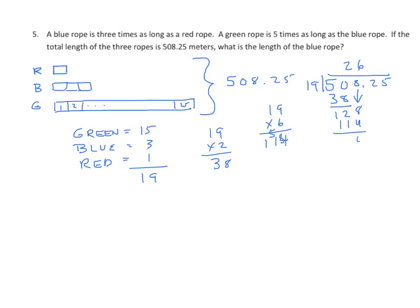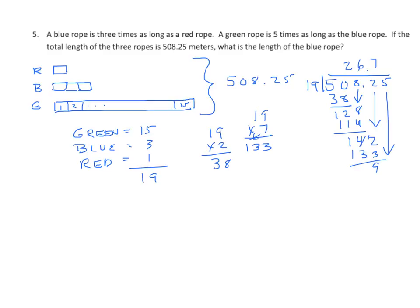We're now going to the tenths place. I'll bring down that 2 and think 20 times 7. So I multiply 19 times 7: 7 times 9 is 63, regroup 6, 7 times 1 is 7 plus 6 is 13 — so I have 133. I subtract and get 9. I bring down my 5 and think 20s — 95 is close to 100, so 19 times 5: 5 times 9 is 45, regroup 4, 5 times 1 is 5 plus 4 is 9 — we get 95. Works out nicely. We put our 5 in the quotient.